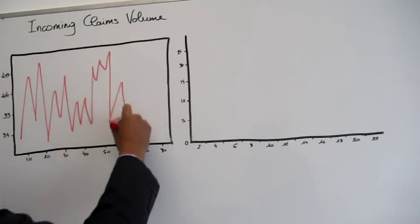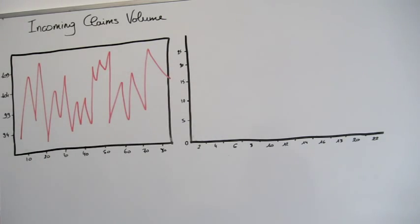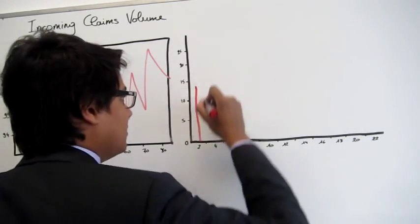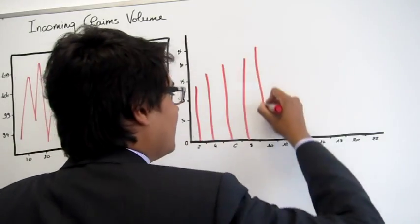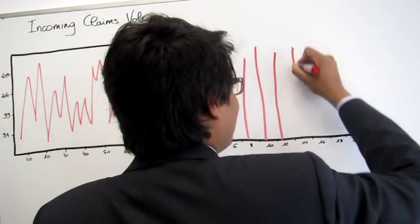In our how-to example we take claims processing. You can use a line chart to track the number of claims or the value of claims received each day and look for trends.